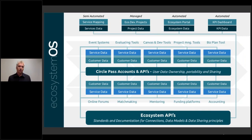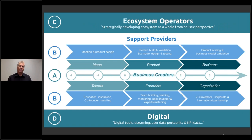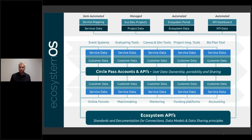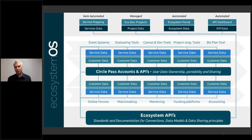When we apply the digital infrastructure visualization on top of this picture — where we have business creators, ideas, products, businesses, and service providers — we can see how ecosystem connectivity through APIs to standards and documentation for connections, open standard data models, and data flows operate. For example, an event organizer's site has information about their event — who it's for, when it's happening, ticket prices — and then there is the customer side: who registered, when did they register, for what event, and who they are.